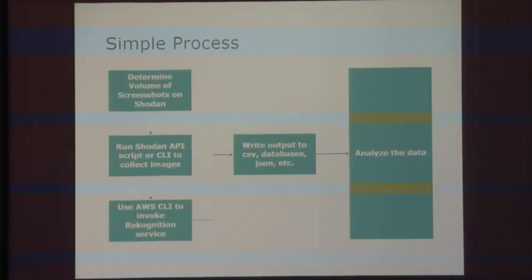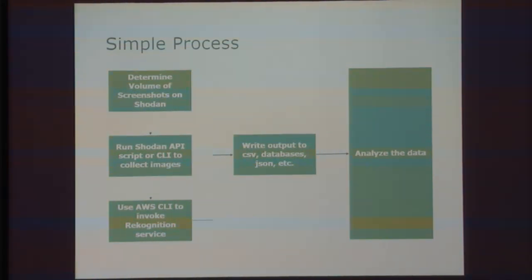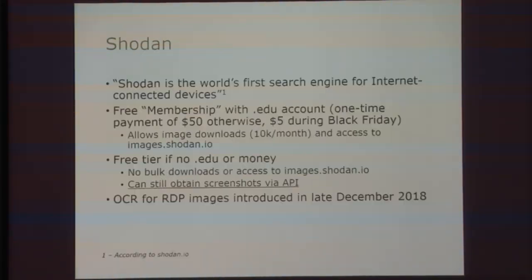I like simple things, I like a simple process. So how do we do this? All we've got to do is hit the Shodan API, take the base64 encoded image, and pass it along to AWS — boom, we get our output. Go dump it into JSON, CSV, whatever output you want, and then you analyze all the things. I have some code written to automate that task, which we'll talk about in a second.